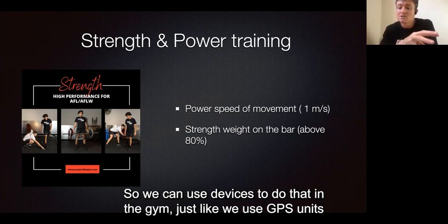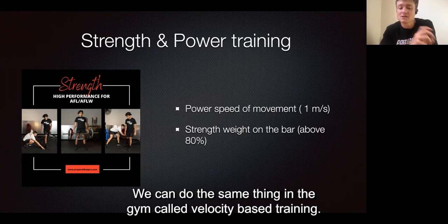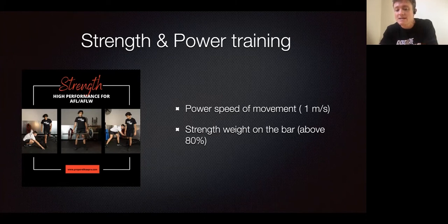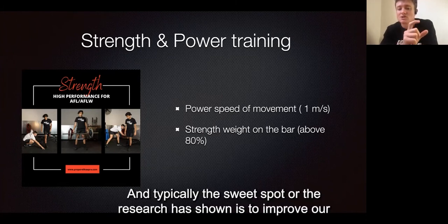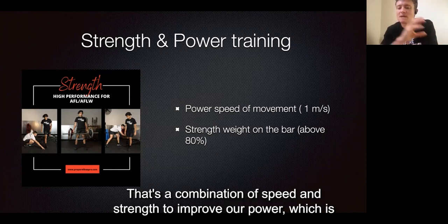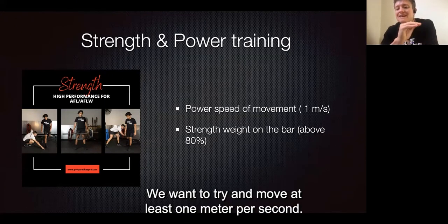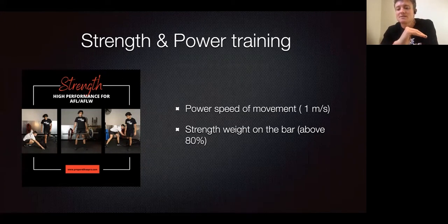Just like we use GPS units to track your work on the field — how far and how fast you run — we can do the same thing in the gym, called velocity-based training. The research shows that to improve power, which is a combination of speed and strength sitting in the middle of the force-velocity curve, we want to try and move at least one metre per second.